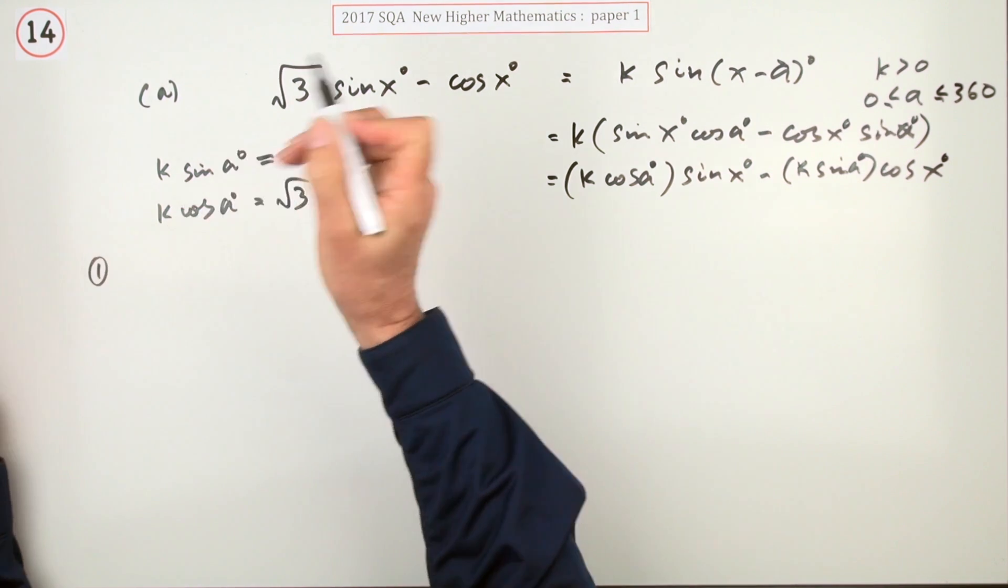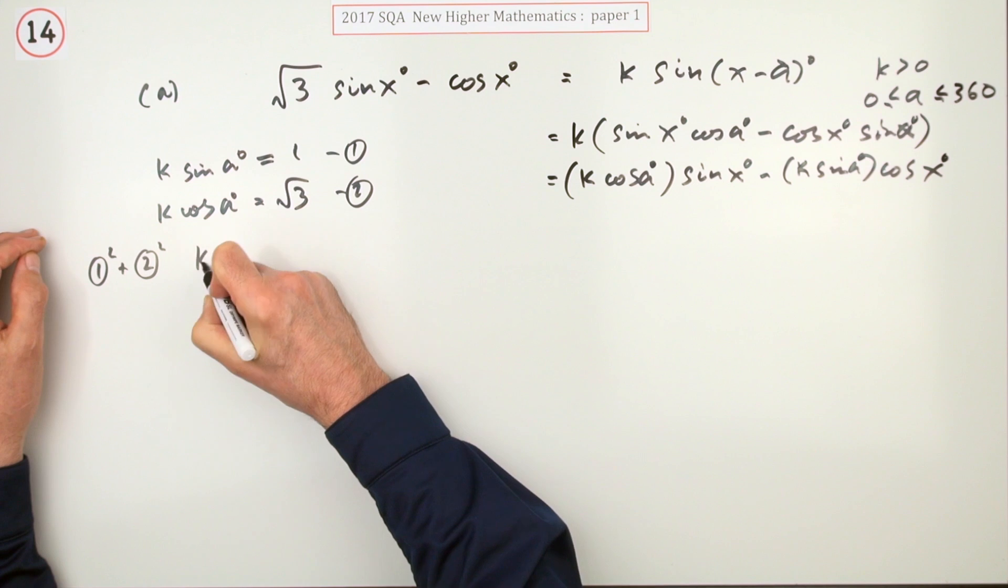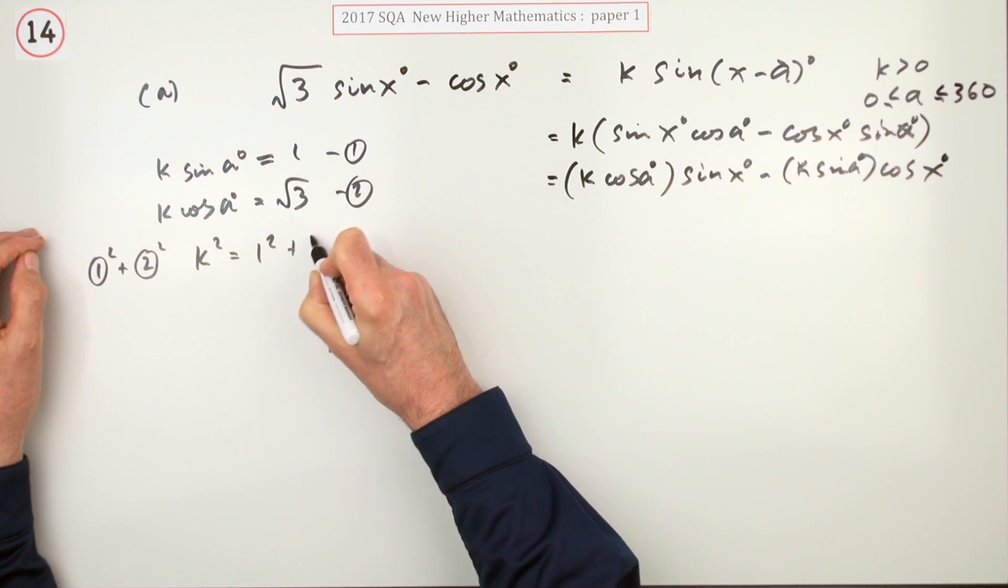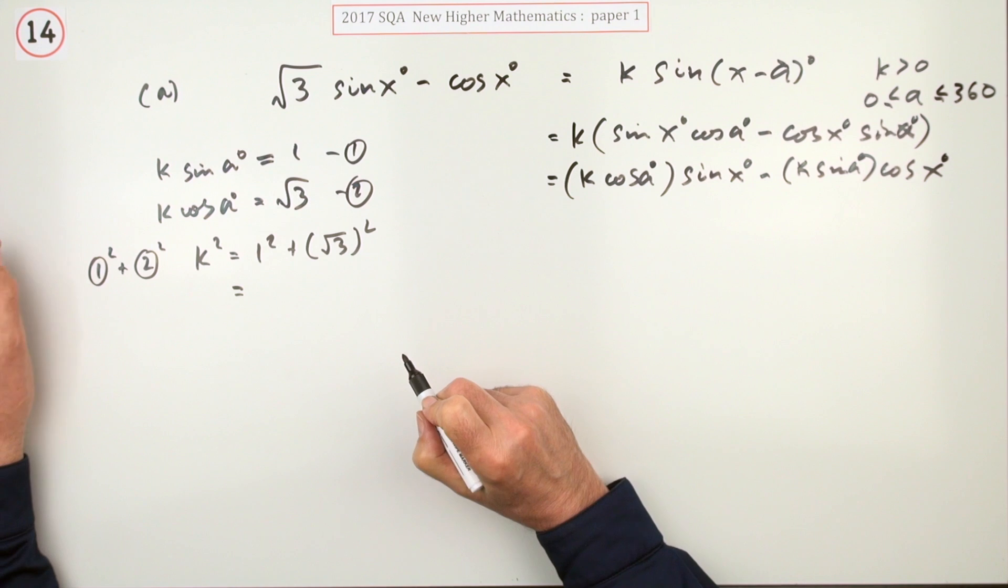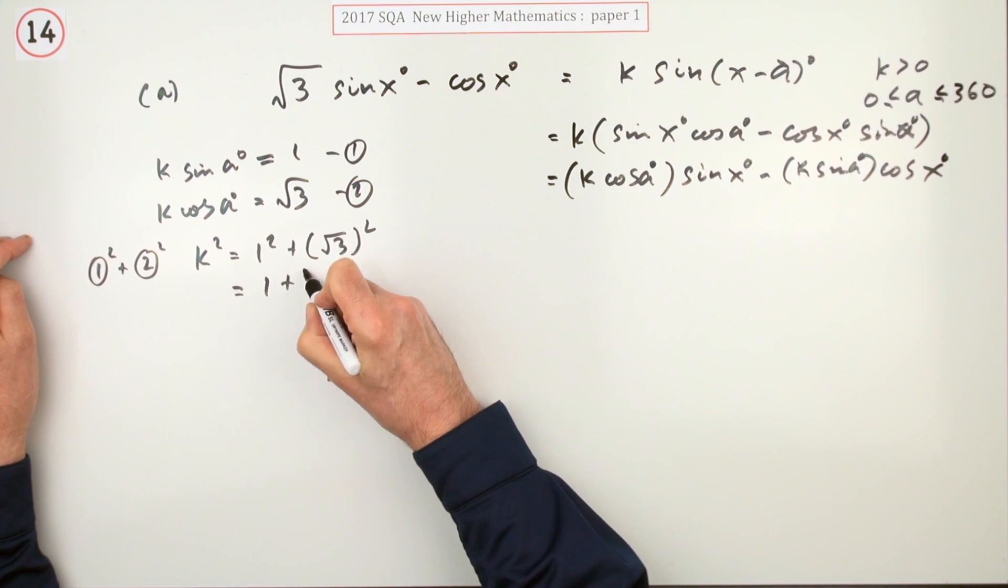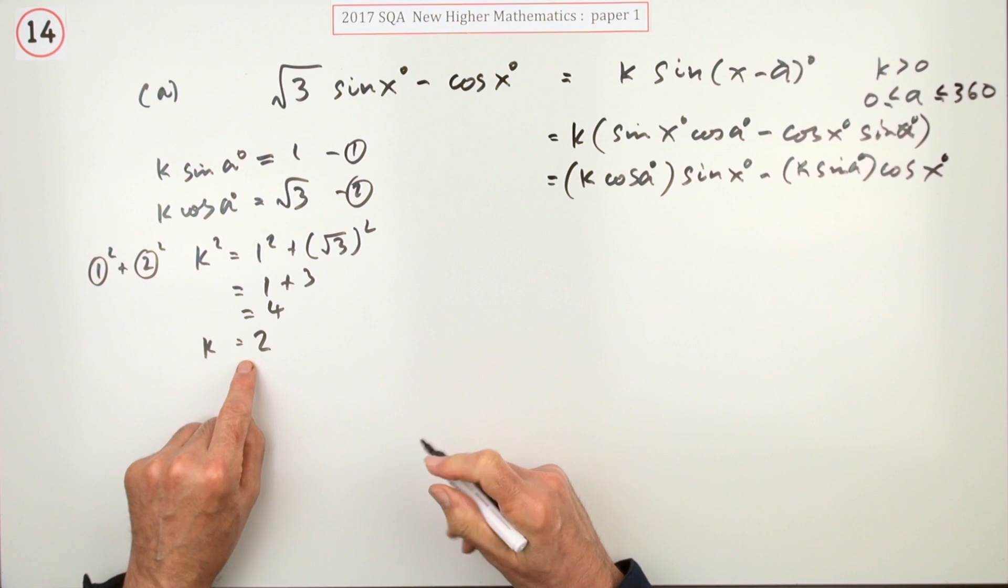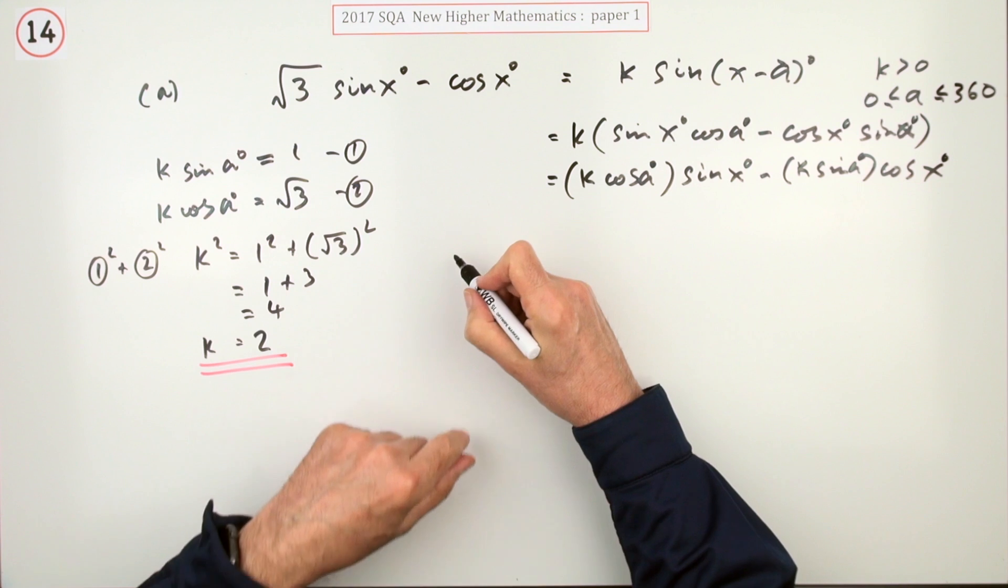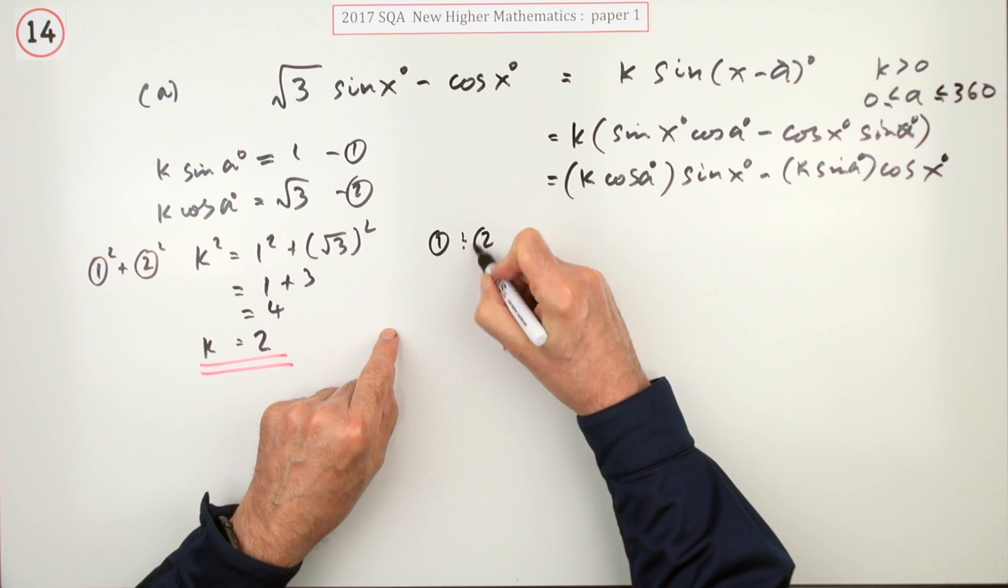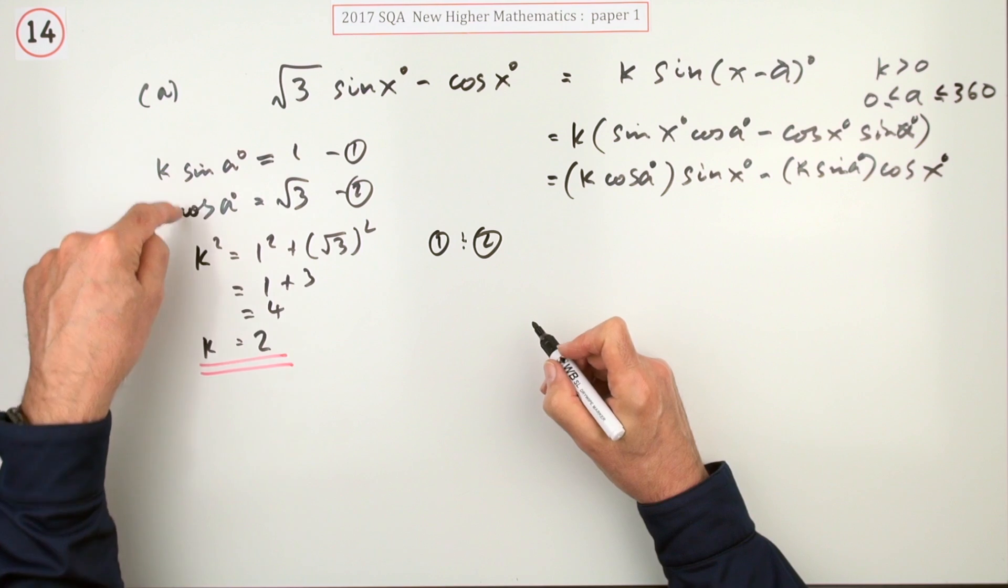Now that's a pair of simultaneous equations which you've now got to solve, and the way they're solved, which you don't need to show at all, is if you square and add them you'll get this. k squared will be 1 squared plus root 3 squared. Well, you might recognize via 1, 2, root 3 triangle there. That's 1 plus 3 which is 4, so k is the square root of 4, which is 2, not minus 4 because it says k is greater than 0.